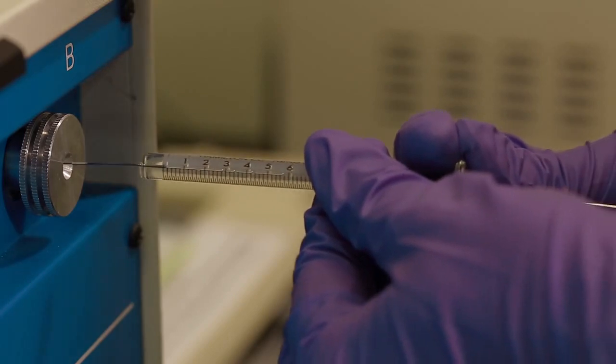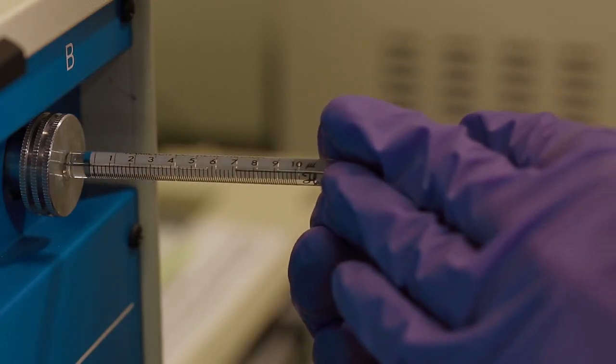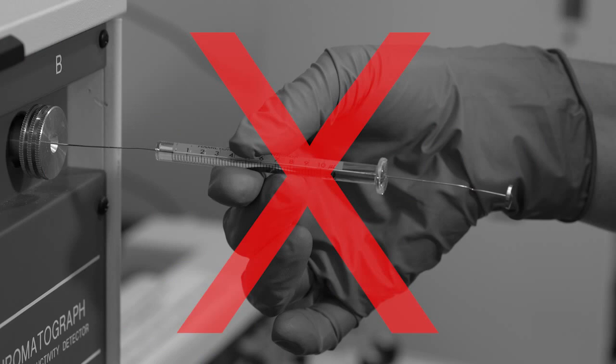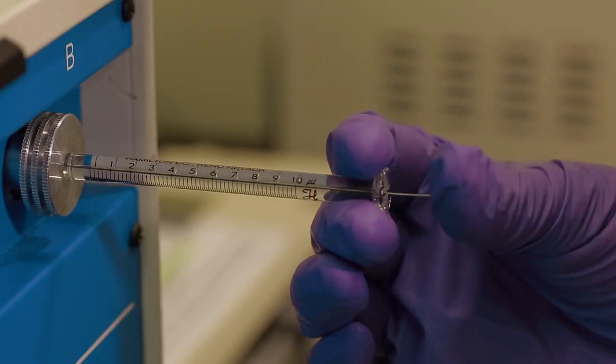You will feel resistance as you insert the syringe. Continue to insert the needle through this resistant material called the septum until the glass is flush with the injection port. Be careful not to bend the syringe. You can now inject your sample into the gas chromatograph.